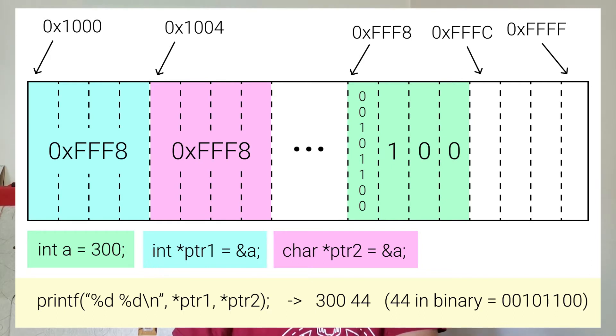Whereas an integer takes up four bytes in C, so it's going to read four bytes from the address that it points to.